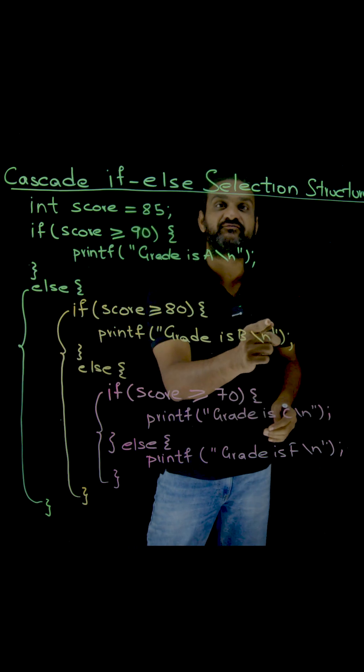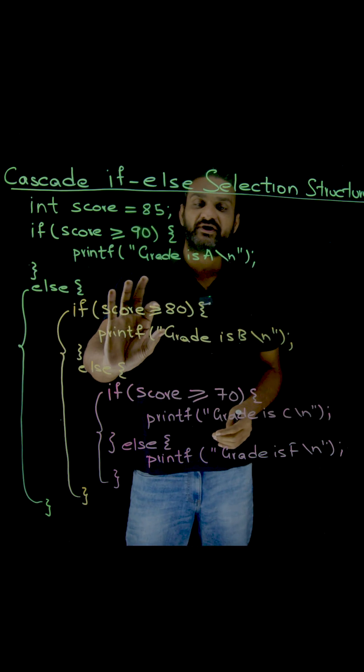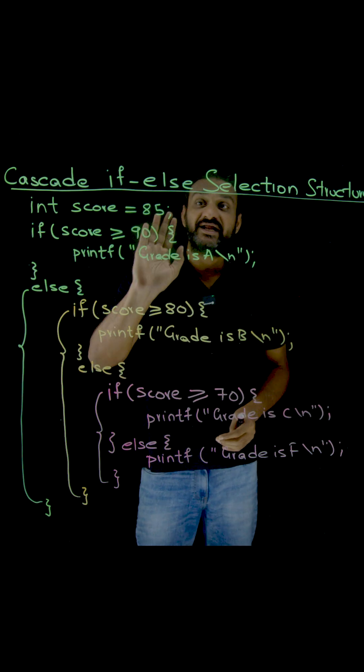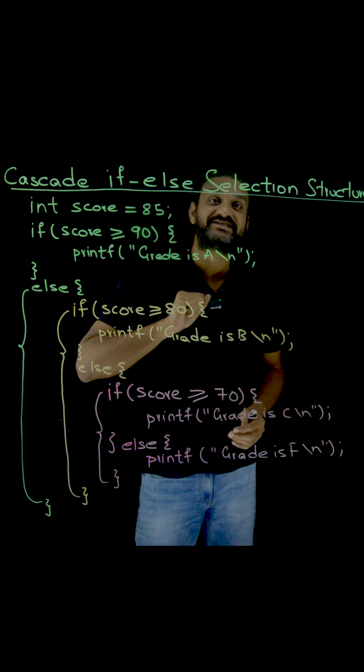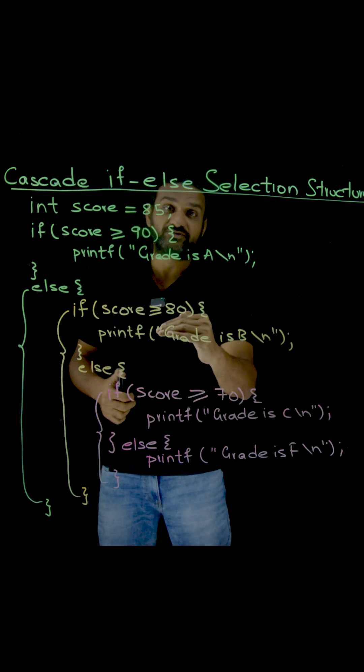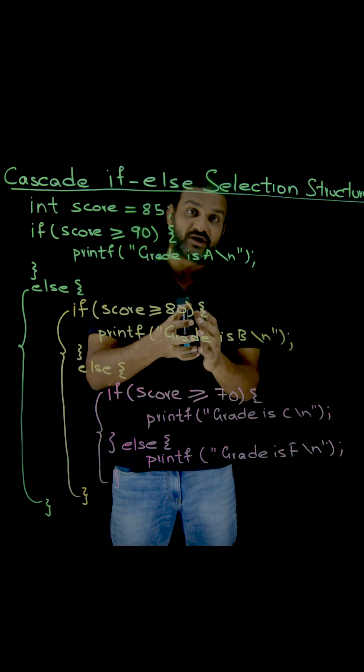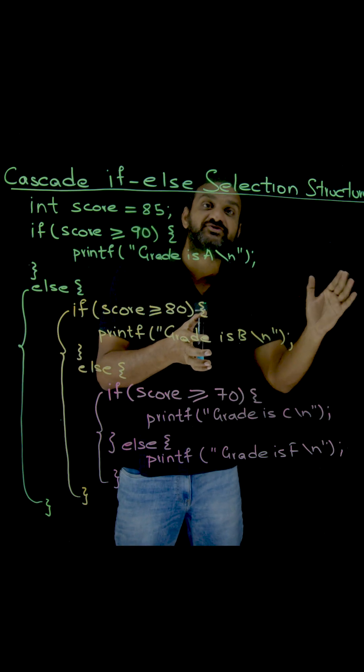Now with this we have allocated the grade. Let's assume that the score is 65. Now how this is going to verify from all the alternatives that are available? Let's check that.